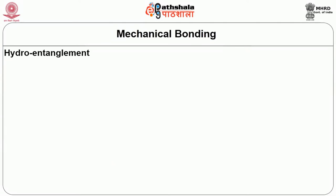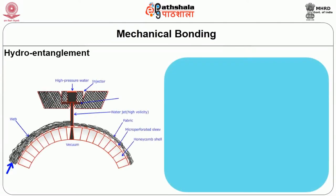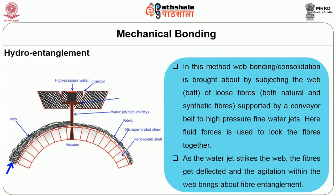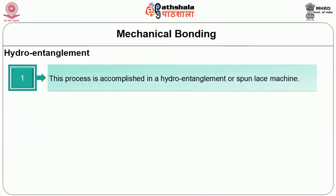The second mechanical technique, which is enormously used, is hydro entanglement. In this method, web bonding or consolidation is brought about by subjecting the web — a loose fibrous material, which could be synthetic or natural — supported by a conveyor belt, to high-pressure fine water jets. Fluid forces are used to lock the fibers together. As the water jet strikes the web, the fibers get deflected, and the agitation within the web brings about fiber entanglement. This process is accomplished in a hydro entanglement or spun lace machine.